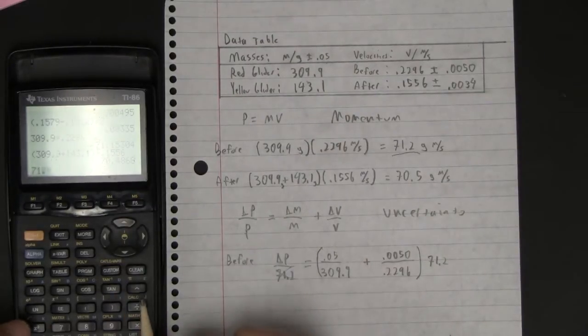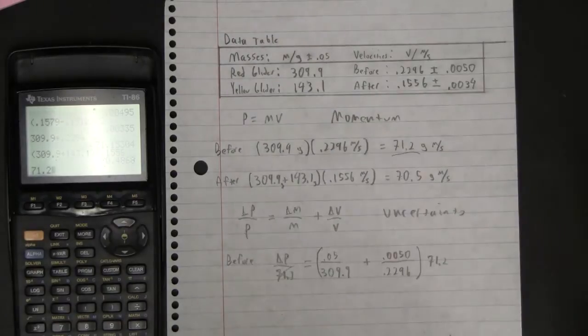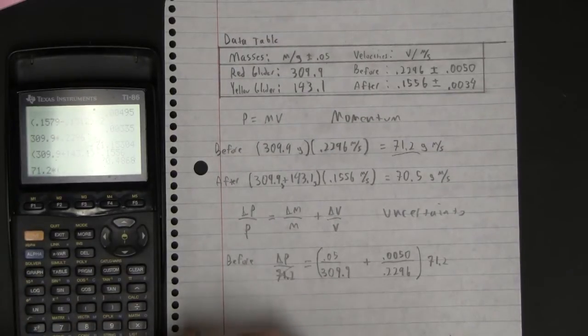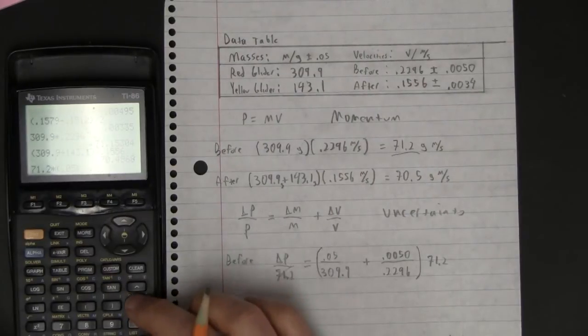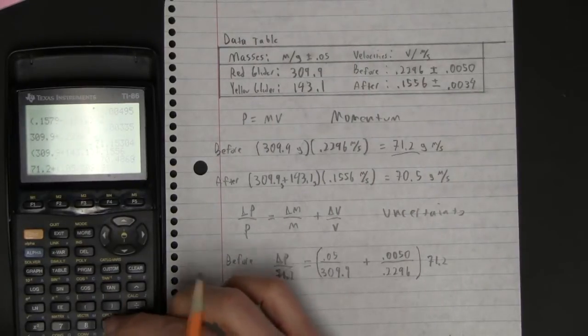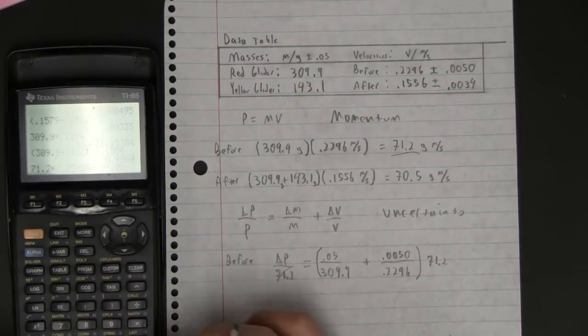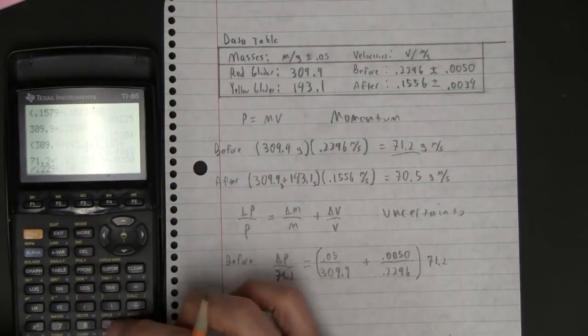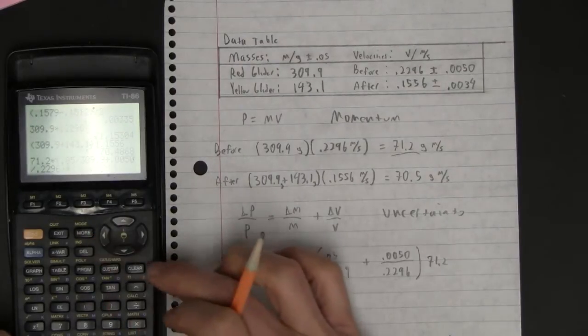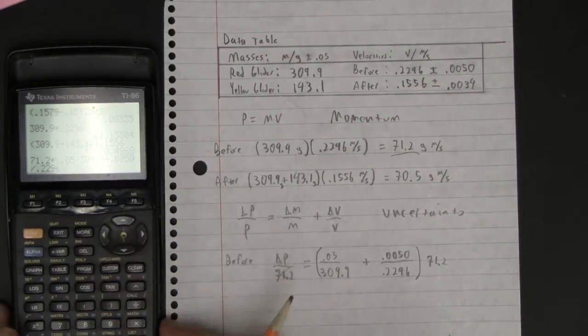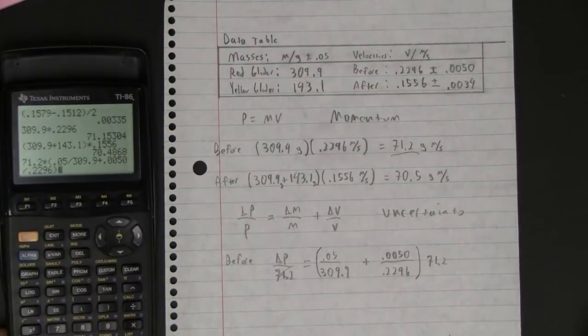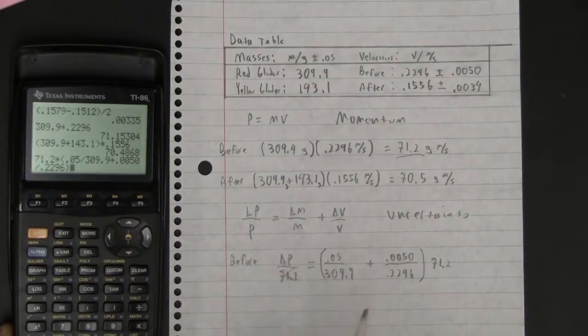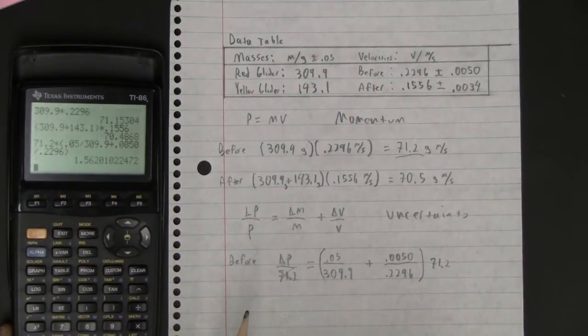So that looks like 71.2, and I should use the unrounded value, but you know what the heck. Okay, times 0.05 divided by 309.9 plus 0.0050 divided by 0.2296. Times, oops, I've already done the times. Let's delete that, or we're going to get a syntax error. So that's what I typed into my calculator. Let me just double-check it before I hit this, and hey,